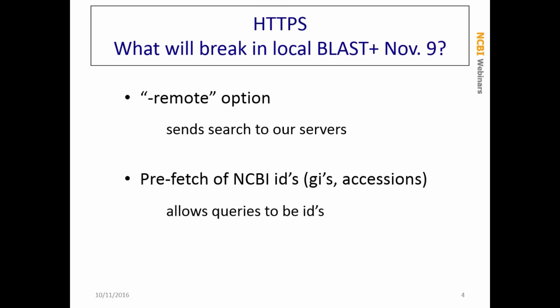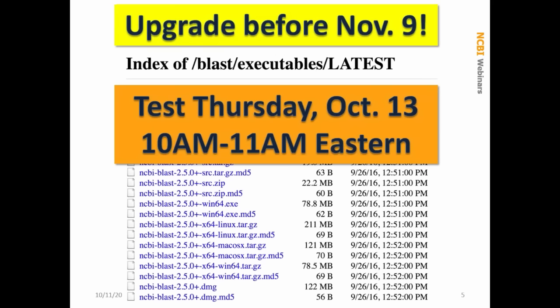Another function that is very handy is the prefetch function. In previous versions you could only use that with the remote option, but in this version it's been improved and you can use it without the remote option. You input a query file containing identifiers — either GIs or accessions — and the programs will fetch those IDs from NCBI to get the sequence records. You will not be able to use these two functions if you have not upgraded before November 9th. We plan to have a test this coming Thursday, October 13th, from 10 a.m. to 11 a.m. Eastern Time — version 2.4.0 should not work during that time, but 2.5.0 should. We may have other tests before November 9th; look on our web pages and the BLAST announce email list for announcements.